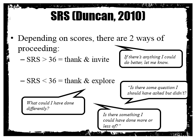Depending on the scores, there are two ways of proceeding. If you have an SRS above 36, you thank and invite more information from the client: 'If there's anything better I could do, let me know. It looks like everything's going well — let me know if you can think of anything I can do to make our relationship or therapy better.' If you have an SRS below 36, you thank and explore — asking questions about change: 'What could I be doing differently? Is there something I could have done more or less of? Is there some question I could have asked but didn't?' You're wondering what was missing so you can adapt and adjust in the next session.